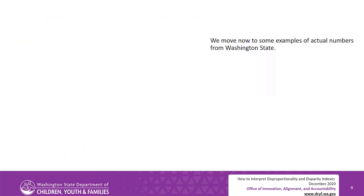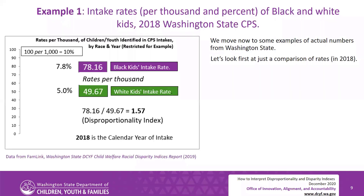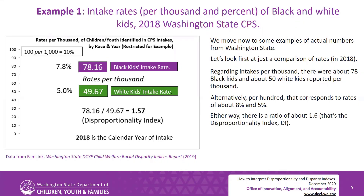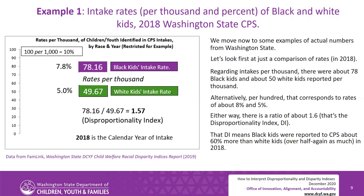We move now to some examples of actual numbers from Washington state. Example 1: intake rates per thousand and percent of black and white kids, 2018 Washington state CPS. Regarding intakes per thousand, there were about 78 black kids and about 50 white kids reported per thousand. Alternatively, per hundred, that corresponds to rates of about 8% and 5%. Either way, there is a ratio of about 1.6 — that's the disproportionality index, or DI. The DI means black kids were reported to CPS about 60% more than white kids — over half again as much — in 2018.